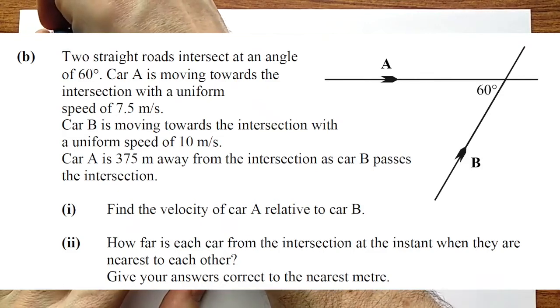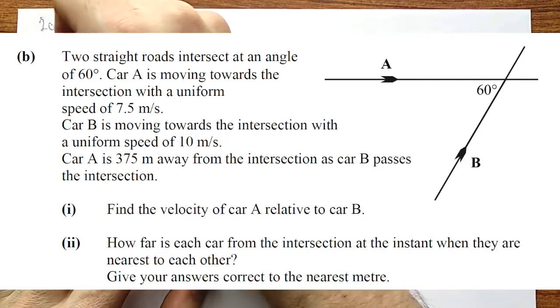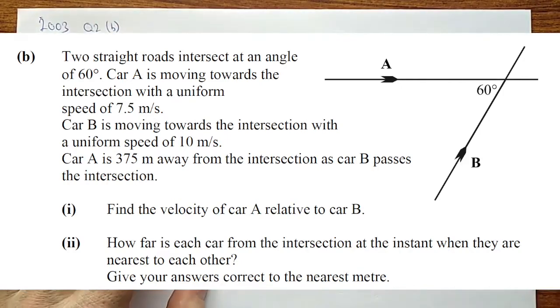Now let's look at 2003, question 2, part B. Alright, this is a relative velocity question with an intersection. Now, even though it's a part B, the only real difference between this and some of the part A's is that the cars are moving at angles. Nothing too freaky.